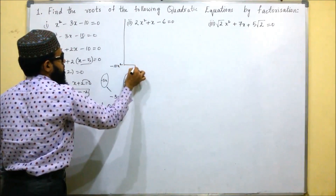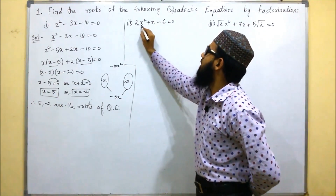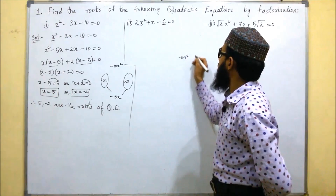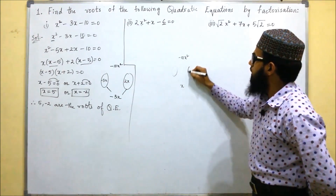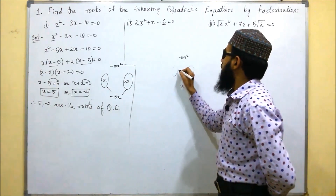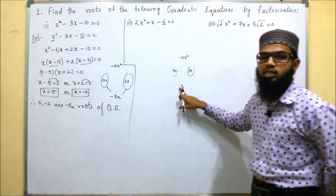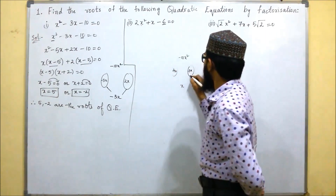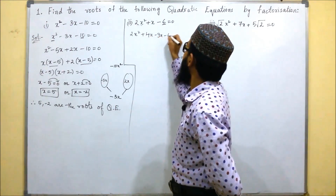For the next equation we do the same — multiply the first and last terms: 2 times 6 gives 12, so we get minus 12x squared. The middle term is x. We need two terms such that when multiplied they give minus 12x squared and when added or subtracted they give x. Those two terms are 4 and 3. Since the sign of x is plus, the bigger number is positive. We substitute: 2x squared plus 4x minus 3x minus 6 equals 0.